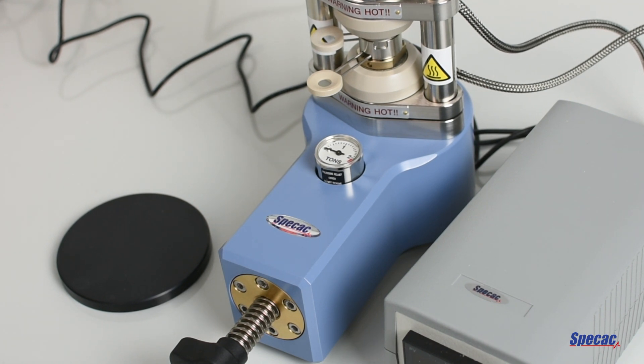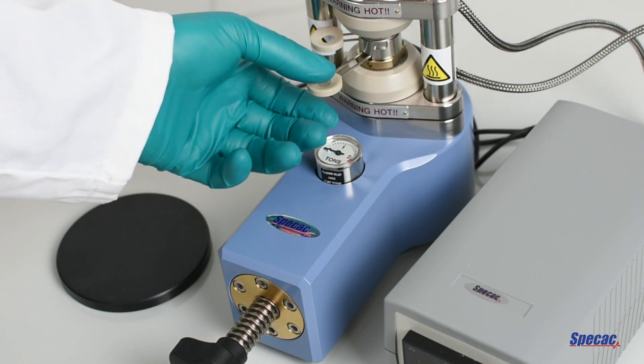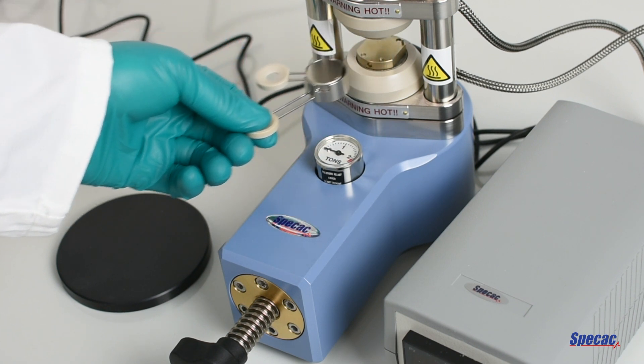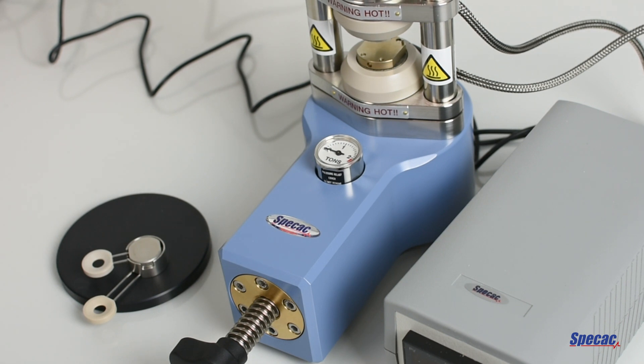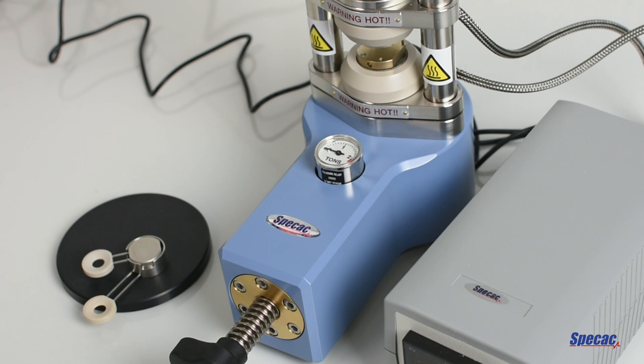Separate the heated surfaces further using the lead screw to aid in the removal of the film maker assembly. Now, very carefully remove the hot film maker assembly and place it onto the cooling plate. At this stage, re-tighten the lead screw assembly to bring the heated surfaces back together to prepare the temperature of the press for a new sample.